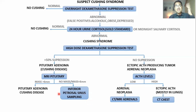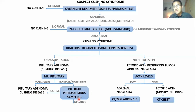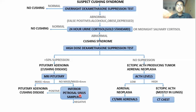If ACTH is found elevated in the inferior petrosal sinus, the source lies within the brain but not in the pituitary — this still counts as Cushing's disease. If it is negative and no excess ACTH is found in the inferior petrosal sinus, it means nothing in the brain or pituitary is secreting ACTH, and it is an ectopic source producing ACTH.